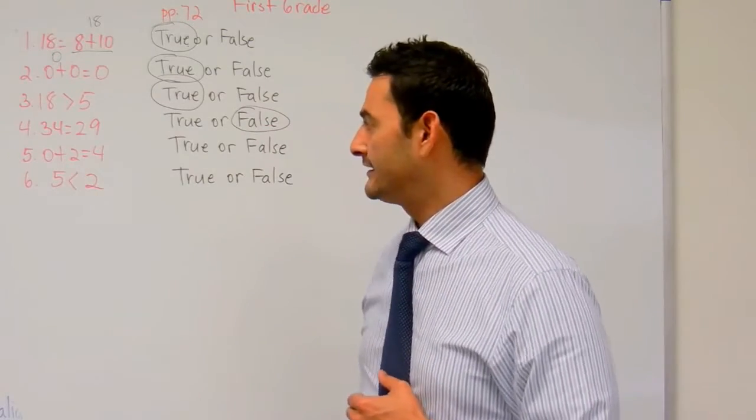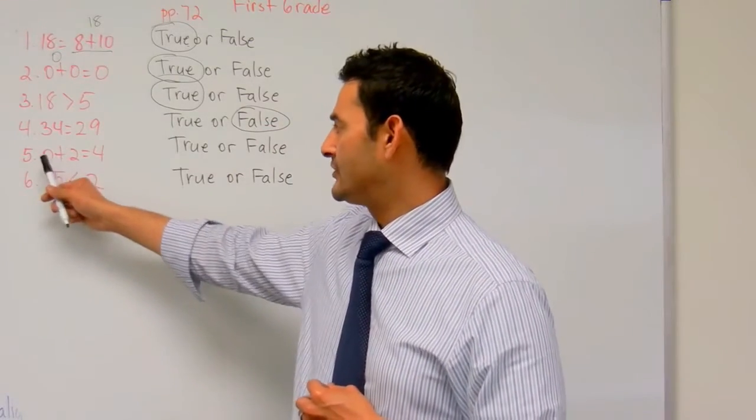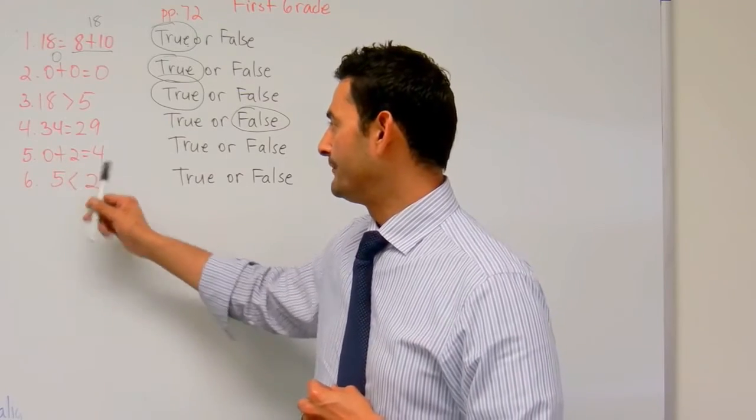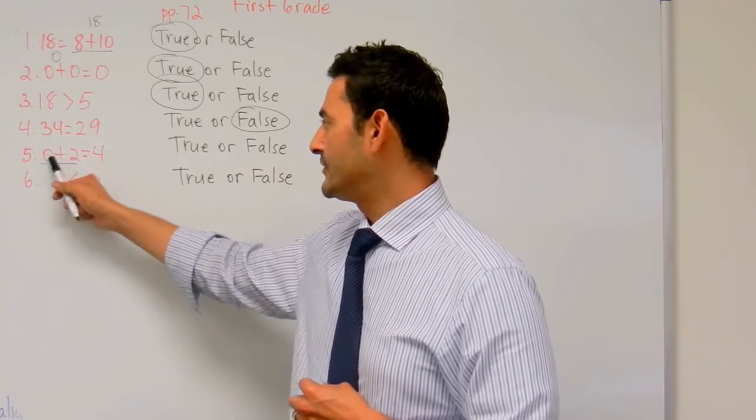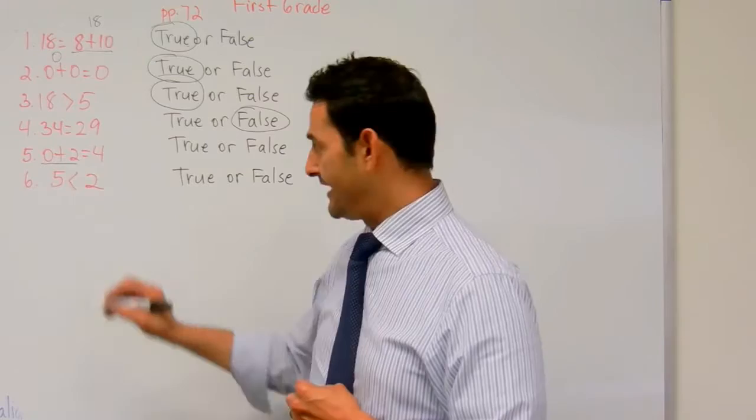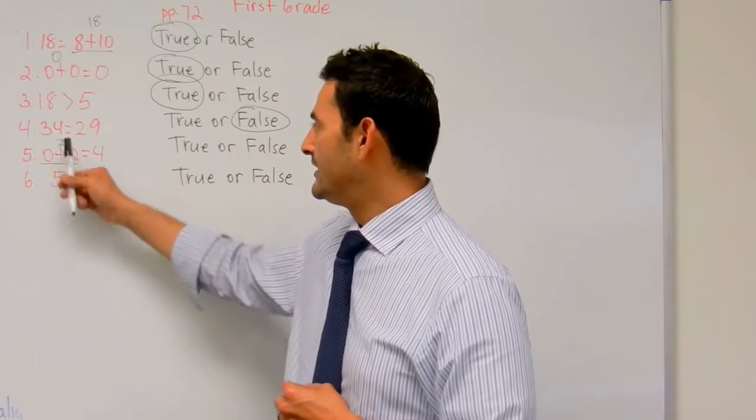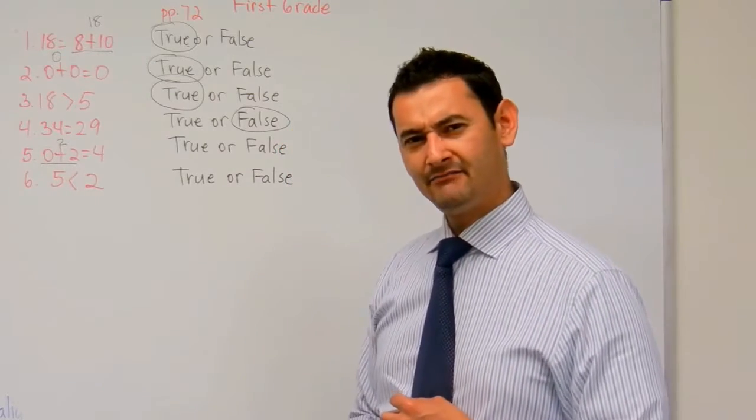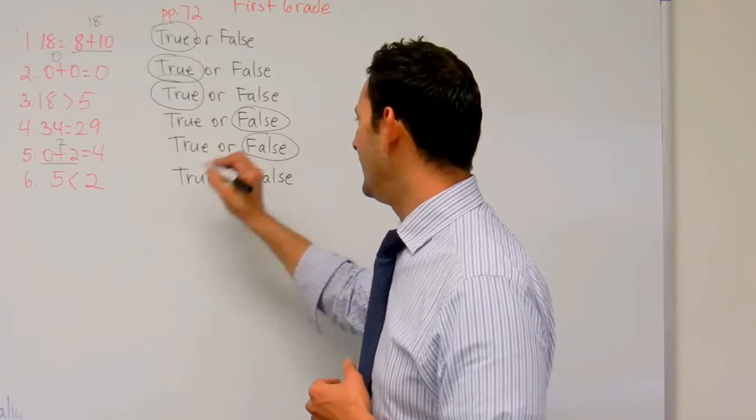Now let's take a look at the next one, number 5. Here we have an equation. 0 plus 2 equals 4. Let's do this part here. 0 plus 2 equals what? That's correct, boys and girls. It equals 2. Does 2 equal 4? No. They're different numbers, so the answer is false.